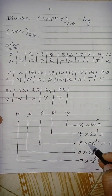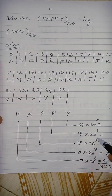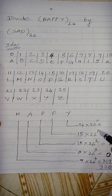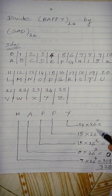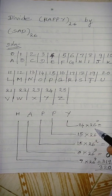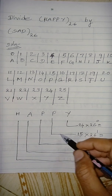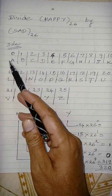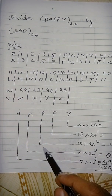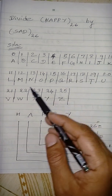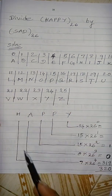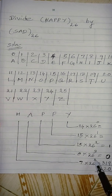Then again P, so 15 into 26 power 2. We know this conversion from basic classes already. What about A? A corresponding is 0, so 0 into 26 power 3 — it becomes 0. H represents 7, so 7 into 26 power 4.